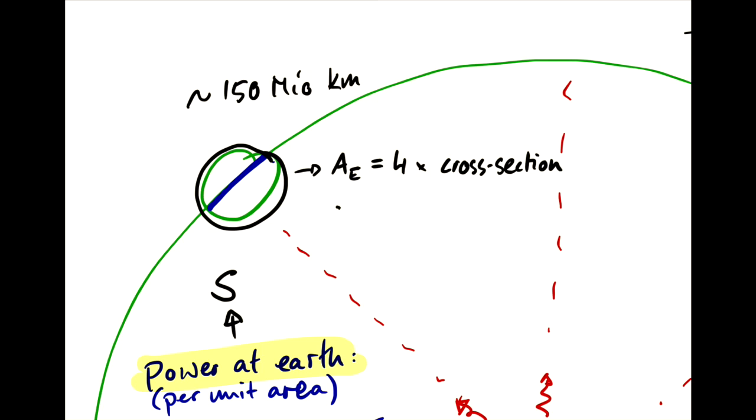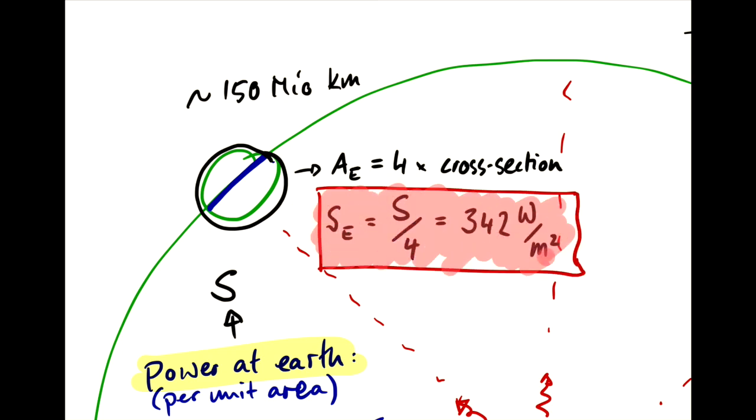And so that sphere has 4 times the area than Earth's cross-sectional area does. So in order to get the power per unit area on Earth's surface, we have to divide our S by a factor of 4. And what we get then is 342 watts per meter squared. And this is what we typically refer to as the solar constant.